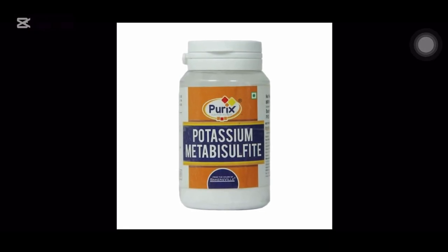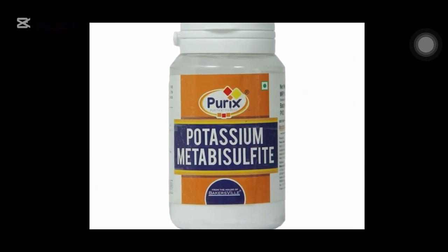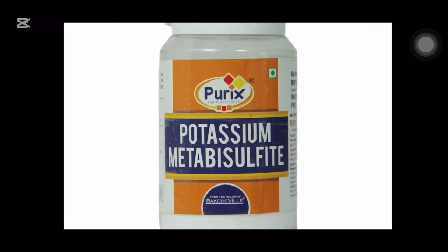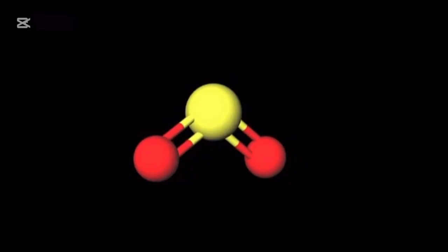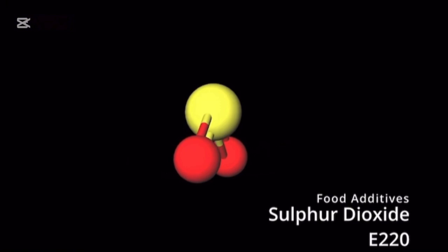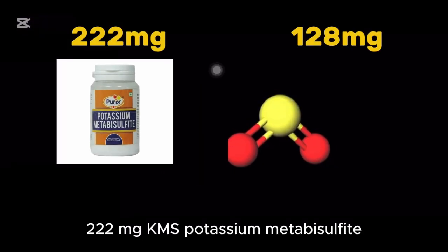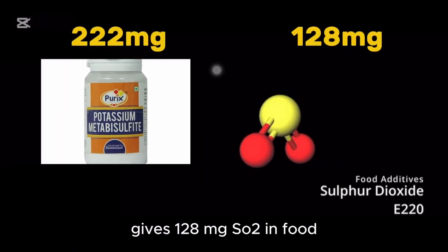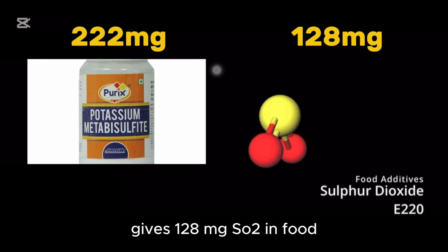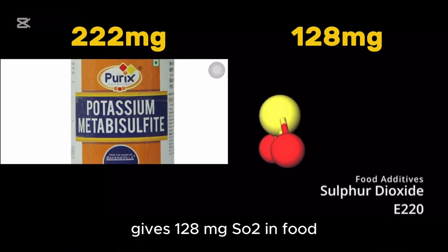Potassium metabisulfite (KMS) generates sulfur dioxide when in an acid medium, such as when dissolved in water. 222 mg of KMS gives 128 mg of SO2 in food.